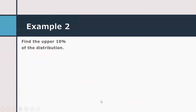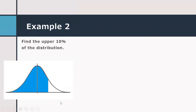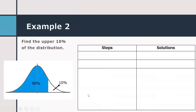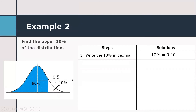Now let's have example number two: Find the upper 10% of the distribution. Draw the normal curve — 90% is on the left and 10% is on the right. We write 10% in decimal as 0.10. Since half of the distribution is 0.5, we subtract 0.10 from 0.5, giving a difference of 0.40.